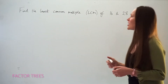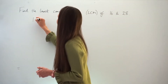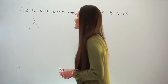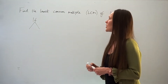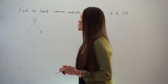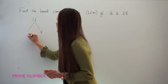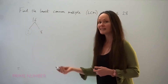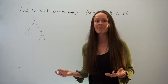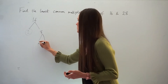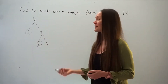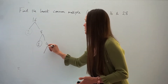Let's start with the number 16 — write that number at the top of your tree. You need to come up with two factors that multiply together to give 16, so I'm going to choose 2 and 8. Two is a prime number, so I'm going to circle that prime factor. Then two factors that multiply to give 8: 2 and 4. Two is prime, so circle that one.